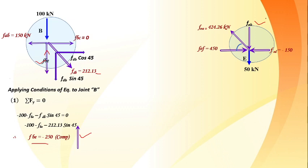When all joints individually satisfy equilibrium in both x and y directions, the whole truss is in equilibrium. If the check fails (LHS ≠ 0), a mistake was made in an earlier joint and it propagated forward. This verification step is an important part of the method of joints procedure.